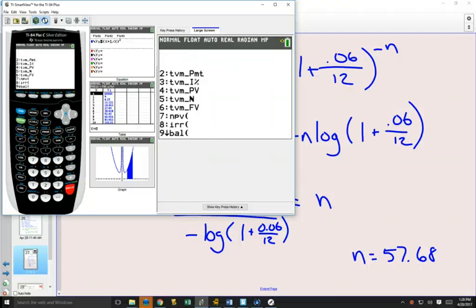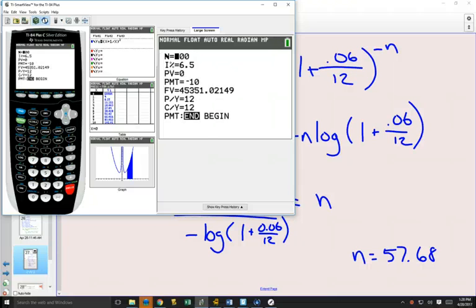So we go to our finance, push enter, enter on TVM solver. We don't know. I'm going to just put a zero in there because we don't know how long it's going to be. The interest rate on this one was 6%. So we'll change this to 6%.